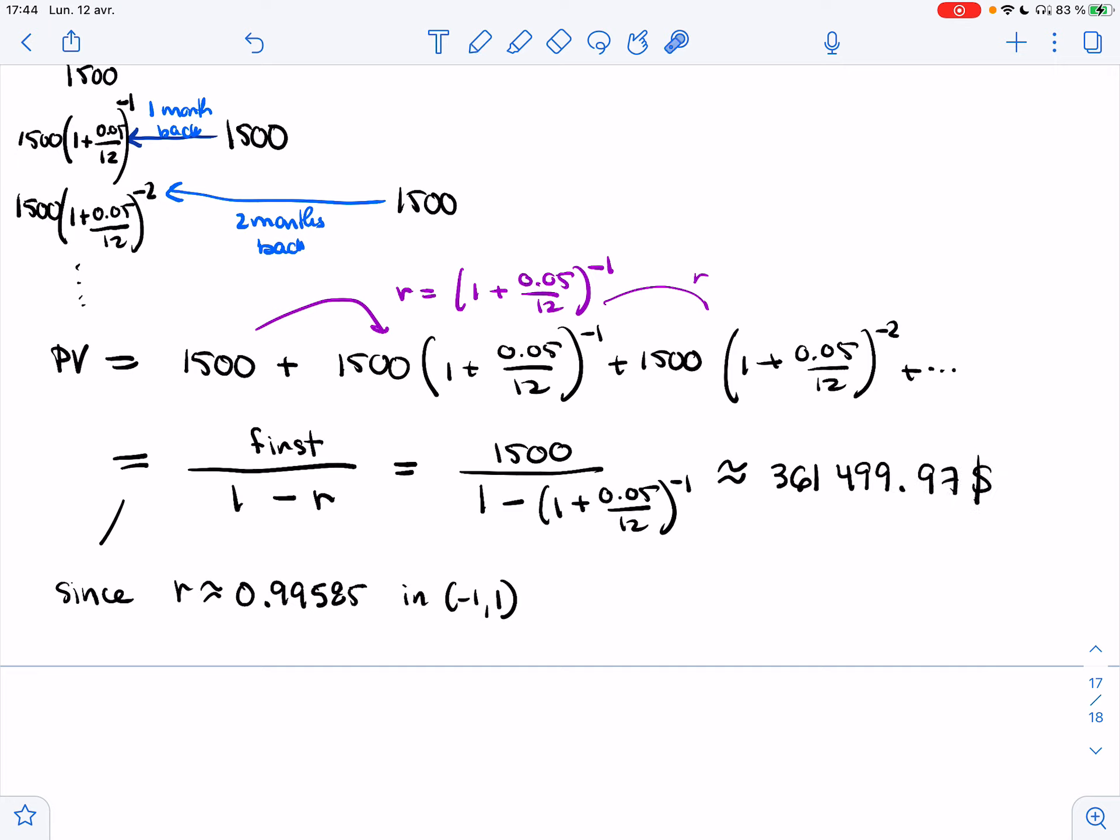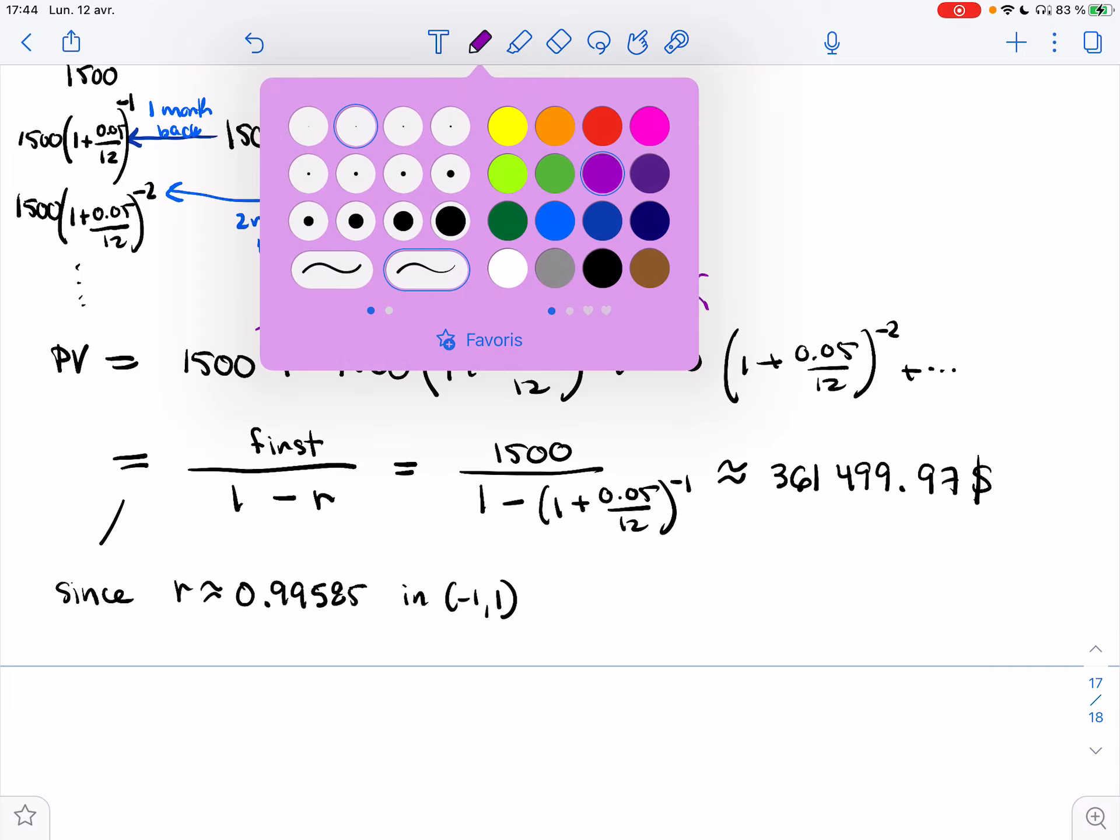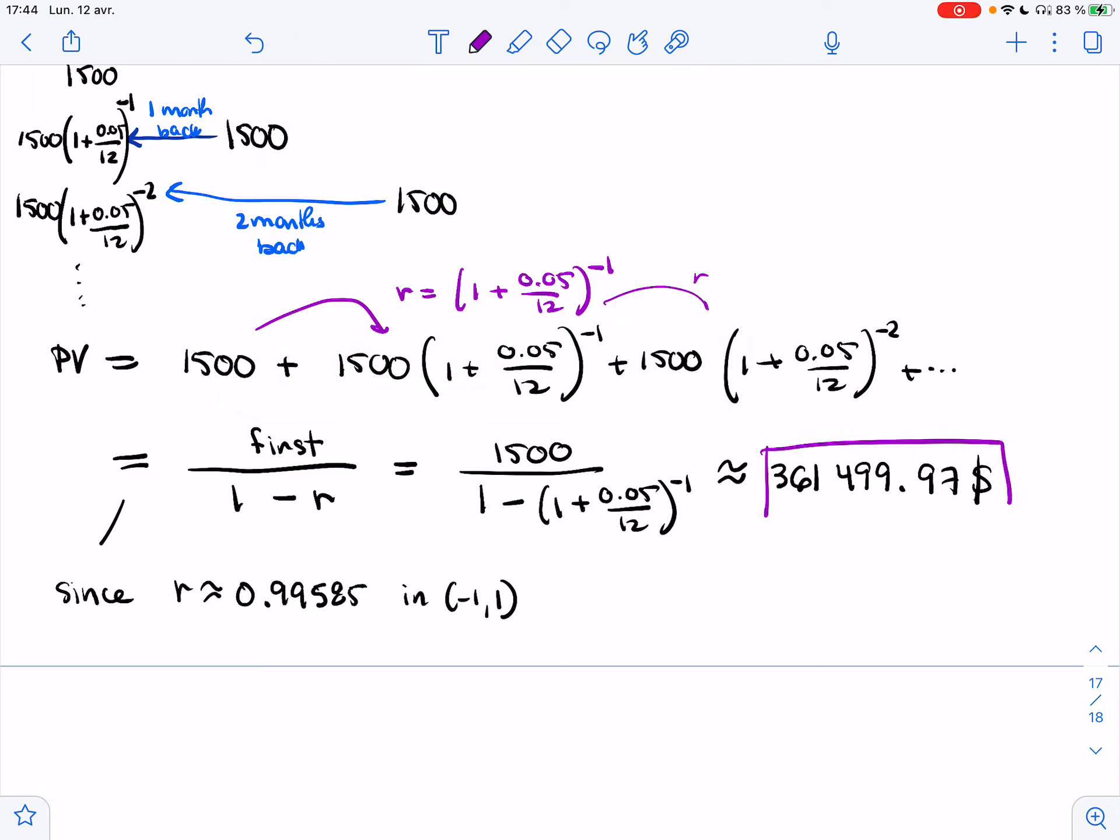Again, rounded to two decimals because we're talking about money, so we're talking about cents, but only at the very end. You keep the exact values everywhere until the very end when you plug it into your calculator and you get the amount.